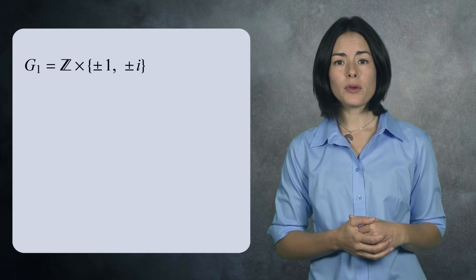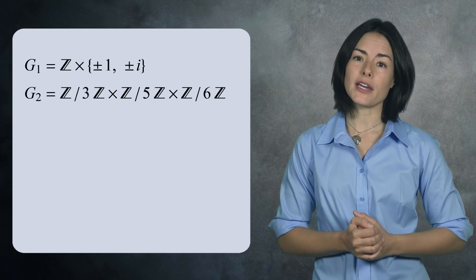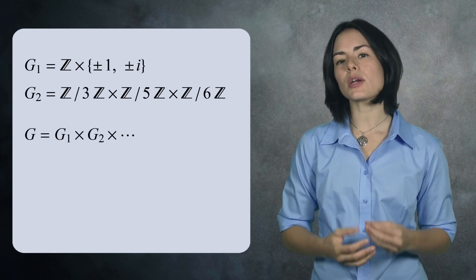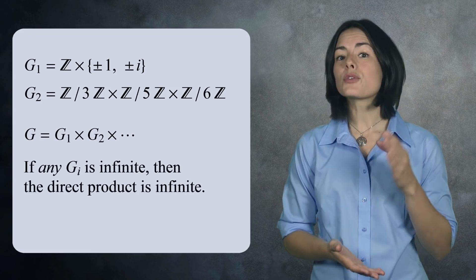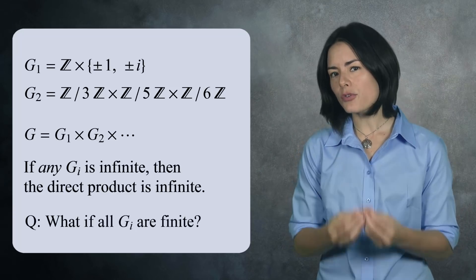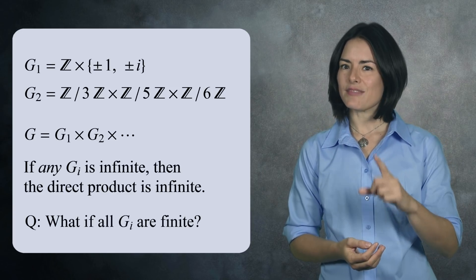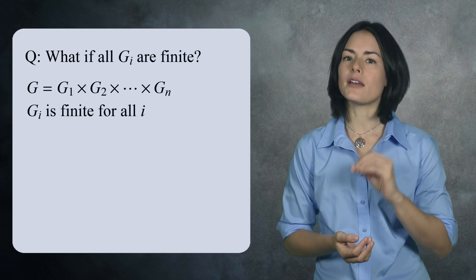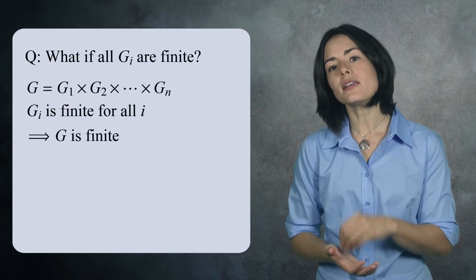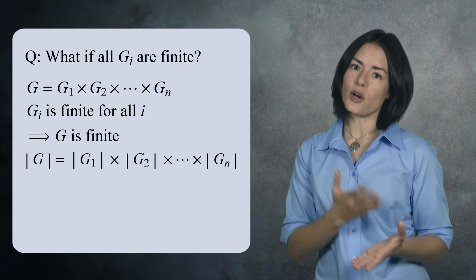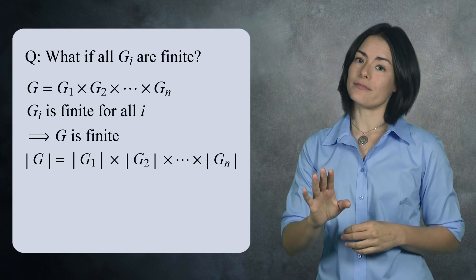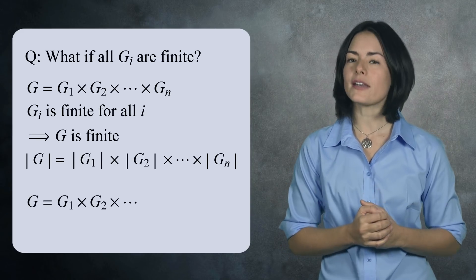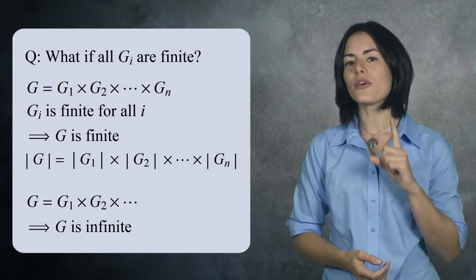We've now seen two examples of direct products — the integers with a finite group, and the direct product of three finite groups. It's worth pointing out that if you take the direct product of a bunch of groups, then if any one of the groups is infinite, the direct product will be infinite too. But if all the groups are finite, it depends: if you take the direct product of a finite number of finite groups, you end up with another finite group, whose order is the product of the sizes of the individual groups. However, if you take the direct product of an infinite number of finite groups, you'll end up with an infinite group.